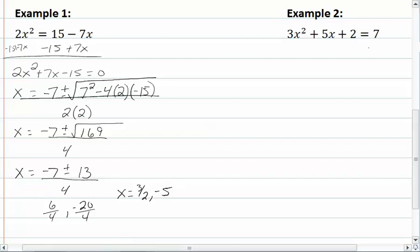In example 2, we need to move our 7 over. So we'll subtract 7 from both sides. We now have 3x squared plus 5x minus 5 equal to zero.